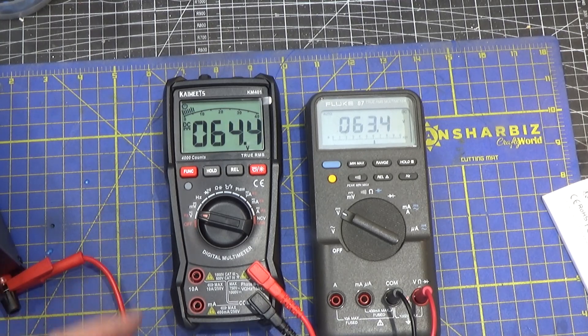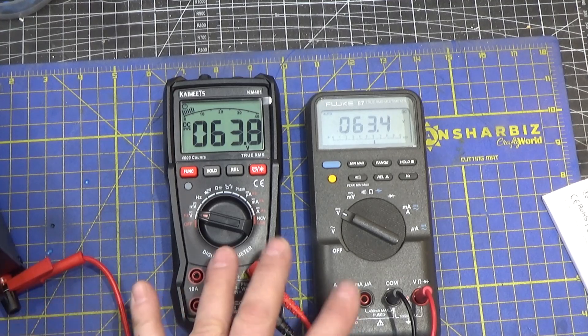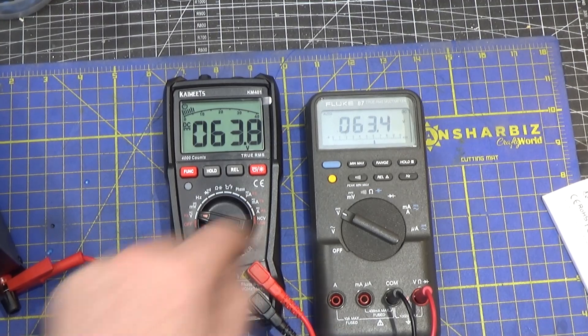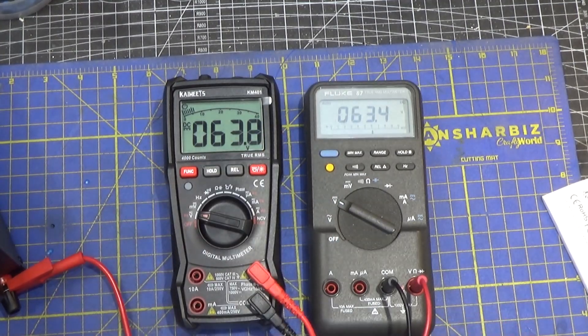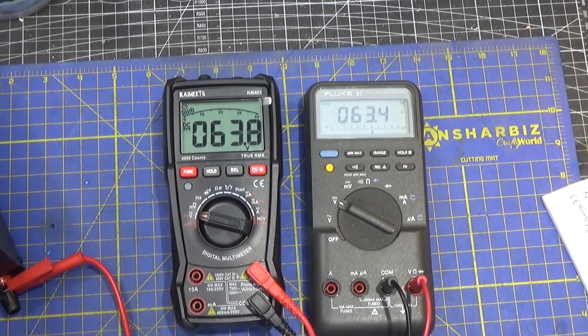That's not horrible so it's not as accurate as the Fluke but if you're looking for an extreme precision multimeter you're not going to buy a $25 multimeter, you might opt for the $300 multimeter although these days there might be some better options out there.